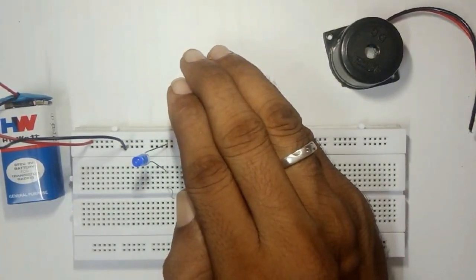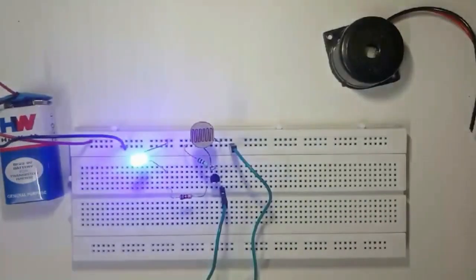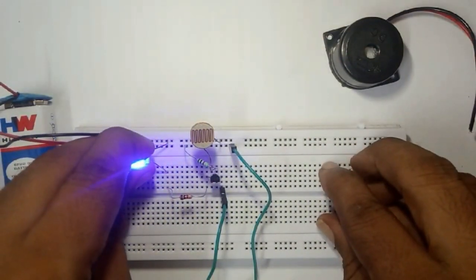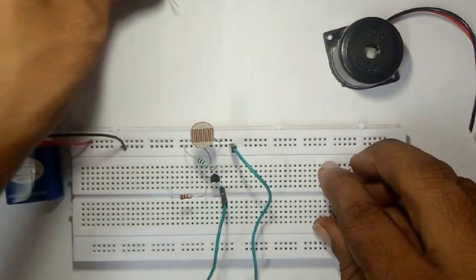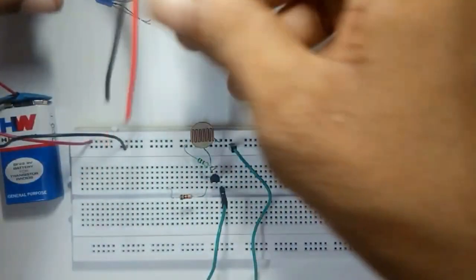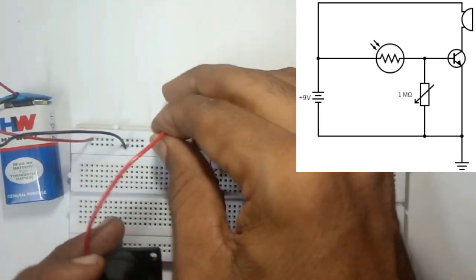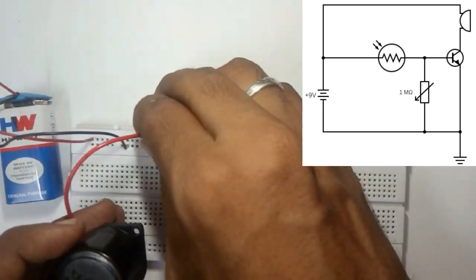Also, replace this with the buzzer. So I'm going to remove this one here, LED, and I'm going to connect the buzzer here. Okay, I have the buzzer here. I'm going to connect one end to the positive, just replacing the LED. That's all, the connection is the same as how we use the LED.